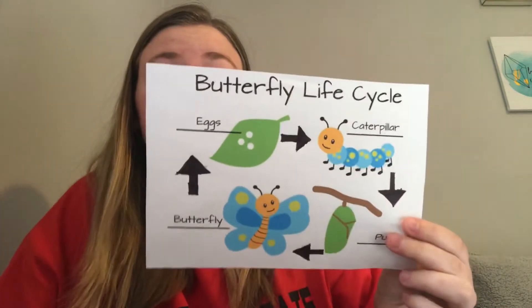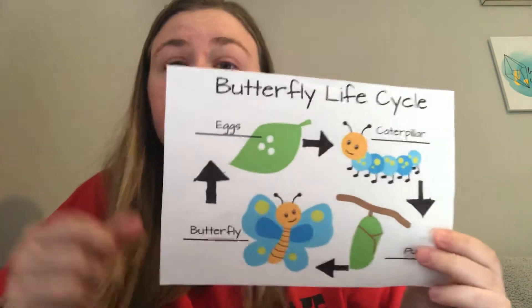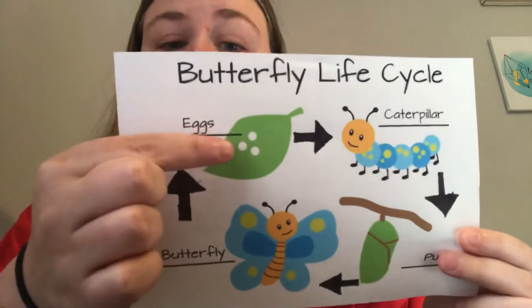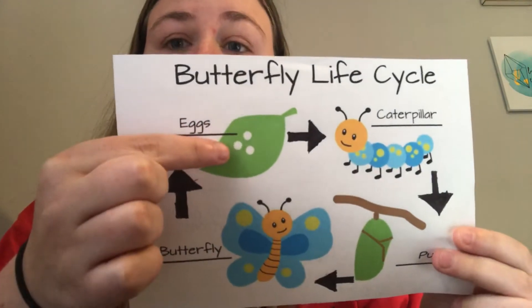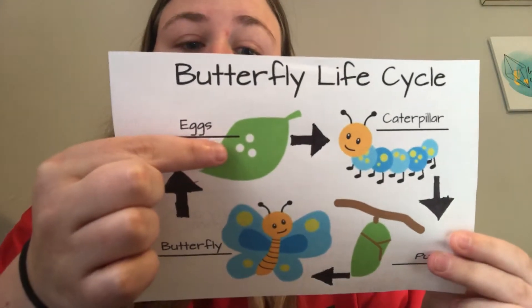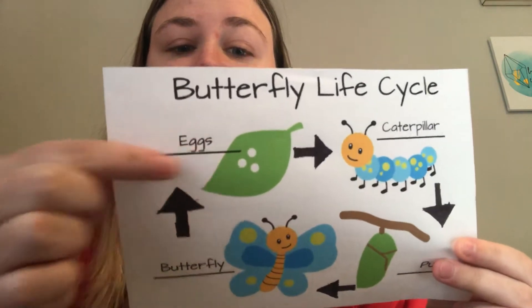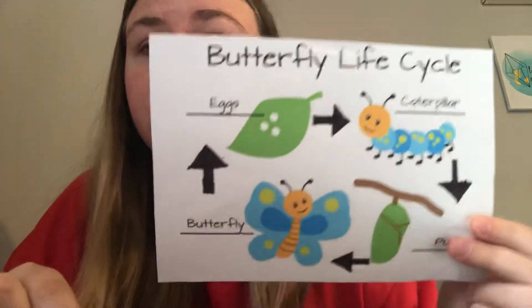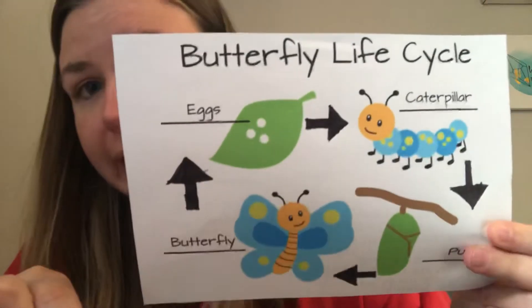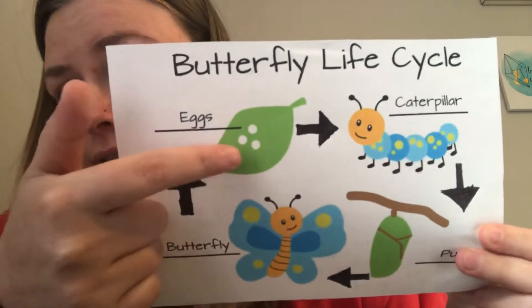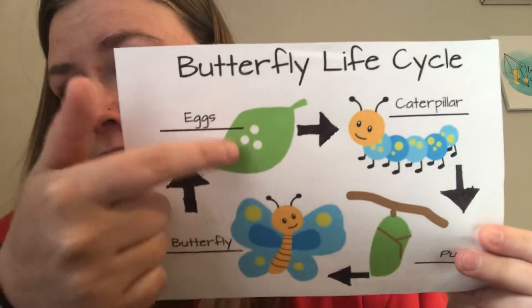The first step in the life cycle is the egg. The mother butterfly attaches the eggs to leaves or stems. See the little eggs right there?